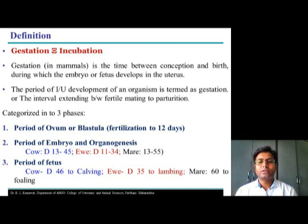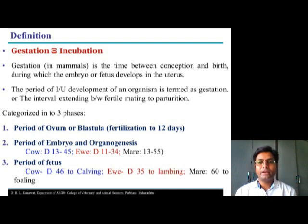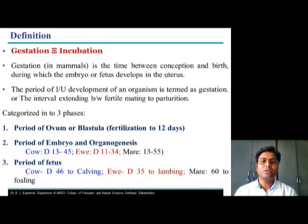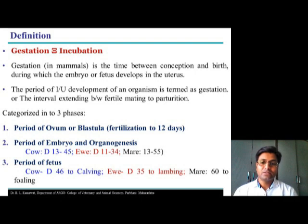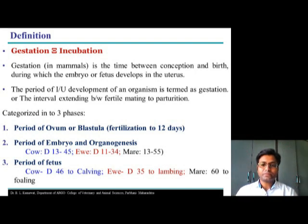Moreover, in the case of primates, unlike other mammals, the fertile period is not well defined. In other mammals, estrus is the most fertile period and ovulation occurs during the ending phase of estrus. But in humans and monkeys, this ovulation period cannot be easily recognized by external symptoms, making the exact time of conception quite difficult to determine. In these cases, the beginning of gestation is usually dated from the beginning of the previous menstrual period.